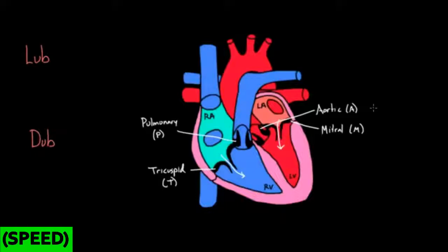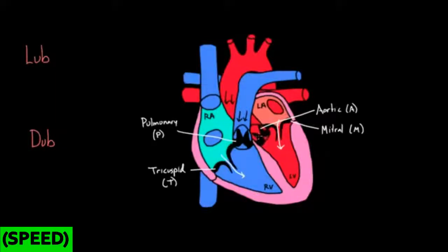As blood fills the ventricles, the tricuspid and mitral valves are open. The pulmonary valve appears open in the diagram, but that's not really the case. Black arrows represent the wrong direction of flow. If blood tries to go backward through the pulmonary or aortic valve, those valves jam up and close — they don't let blood pass through. White arrows represent correct flow, and black arrows represent incorrect flow. So the aortic and pulmonary valves are actually closed when the mitral and tricuspid valves are open.